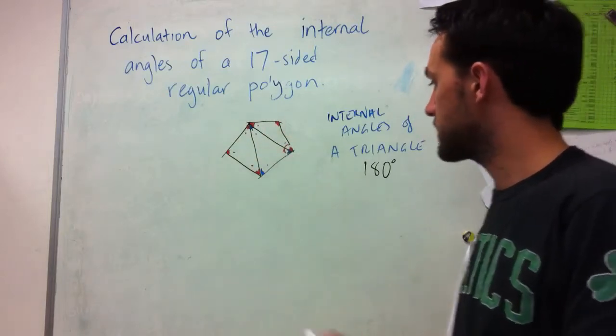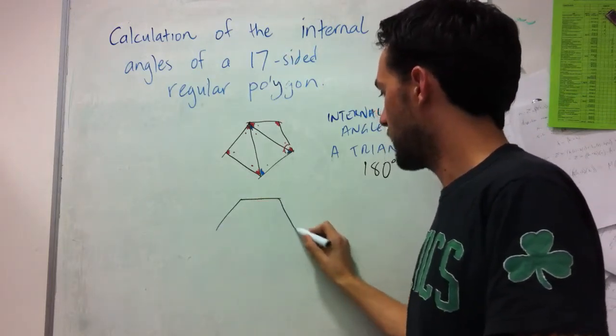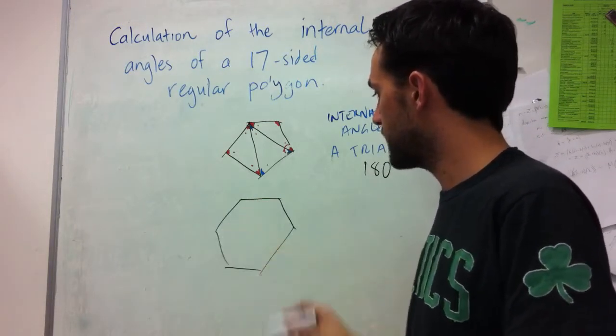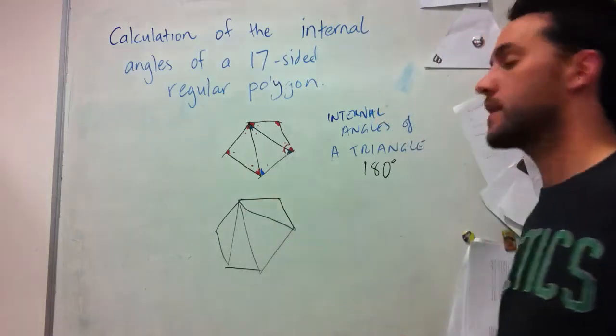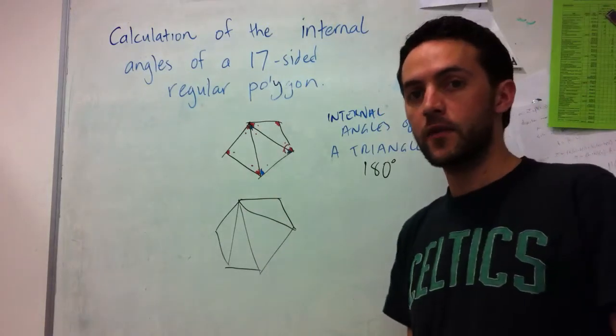For pentagons there's three. If I had a regular hexagon like this, then I'm able to make four triangles by dividing it up this way.